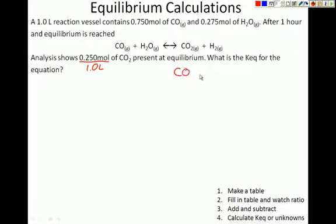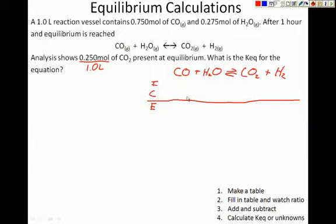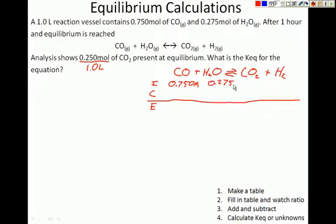Let's do step one and make a table. We write our formula: carbon monoxide plus water forming an equilibrium with carbon dioxide and hydrogen gas. Then we make a table with rows for Initial, Change, and Equilibrium — sometimes called an ICE table. We start filling in what we know: initially, we have 0.750 moles of carbon monoxide in a one liter reaction vessel, so the concentration is 0.750 M. For water, we start with a concentration of 0.275 M.